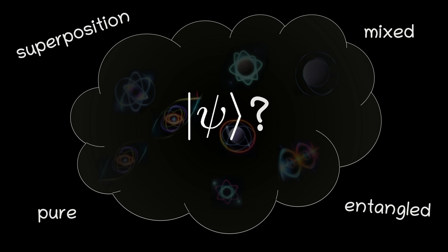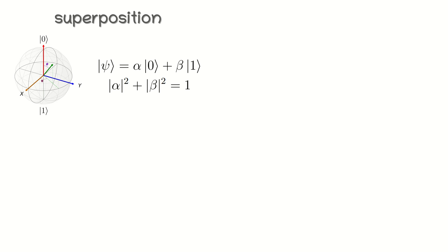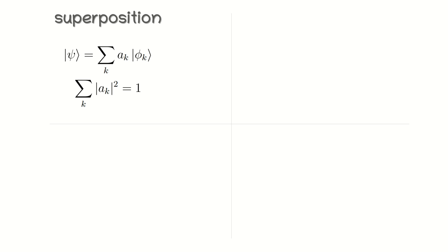Superposition and entanglement are two main features that differentiate the quantum computer from the classical one. In other words, they do not have classical analogs. Superposition refers to the ability of a quantum system to exist in multiple states at the same time. In a single qubit system, superposition allows the qubit to exist as a linear combination of its basis states — for example, 0 and 1 — with complex probability amplitudes. It can be represented as a vector on the Bloch sphere. The general state of a k-qubit quantum register can be written as a linear superposition of the basis vectors.